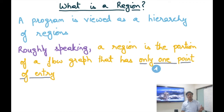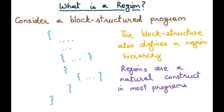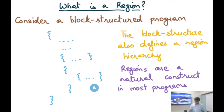This is very similar to the requirement we had for a natural loop — a natural loop is a cycle which has only one point of entry. Similarly, a region is a portion of the program; it need not be a loop or a cycle, but a portion of the program that has only one point of entry. Consider a block-structured program like the ones we write in a high-level language like C, where curly braces define blocks. Each of these blocks forms a region and this nesting of blocks forms a region hierarchy, because it is not possible to jump to the middle of a block.